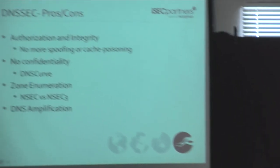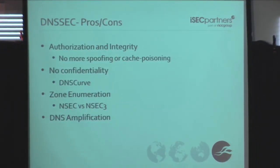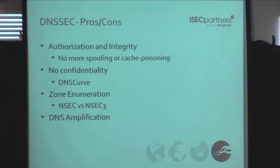Another issue: when we look at a DNSSEC record response, it contains a pretty sizable hash of that record type. A simple A record request with a spoofed source IP would result in a very large data chunk being sent to that IP. We can actually use this to do DNS amplification attacks for DDoS. We've already seen this in the wild, and DNSSEC makes those even more powerful because there's quite a bit of information coming back from a small request.